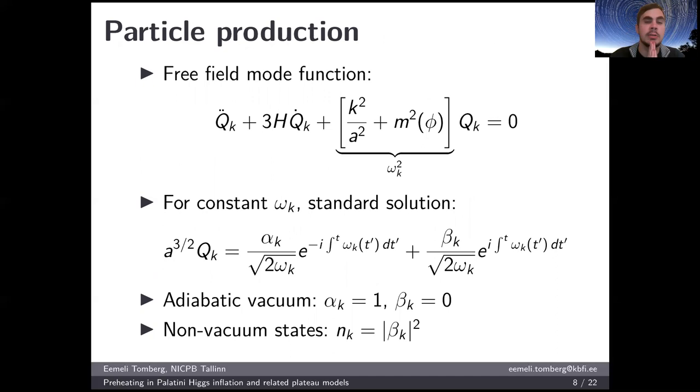Then on to the particle production. To study particle production in these models, we use linear perturbation theory where each Fourier mode of our fields behaves independently. We then look at these Fourier modes of these produced fields and they will be driven by this ω_k² term depending on k and on the mass of the particle. If this ω_k is constant or only varies slowly, then the standard solution contains these negative and positive frequency modes characterized by these α and β constants. An adiabatic vacuum is given by a solution where this α is one and β is zero.